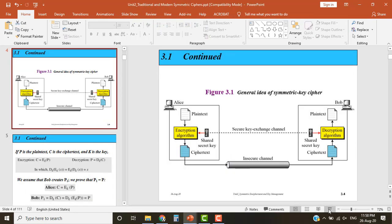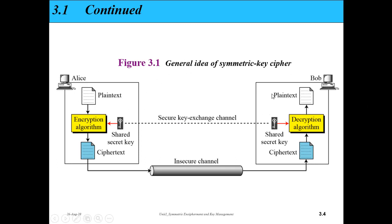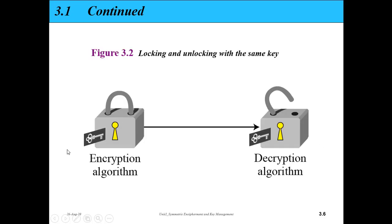We understood this with a diagram: Alice wants to send a message to Bob. Alice has the plaintext and uses symmetric key cryptography — the same key is used for both encryption and decryption. The plaintext and shared secret key are input to the encryption algorithm, producing ciphertext sent through the insecure channel. Bob uses the same secret key with a decryption algorithm on the ciphertext to regenerate the plaintext.